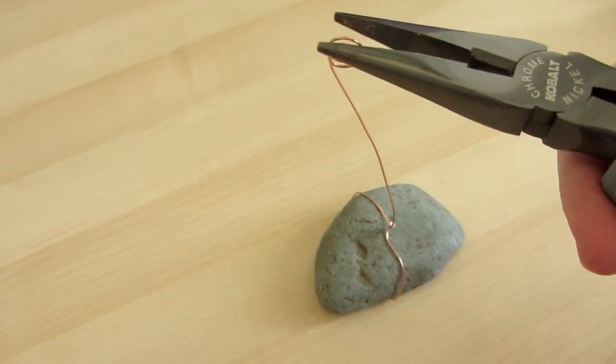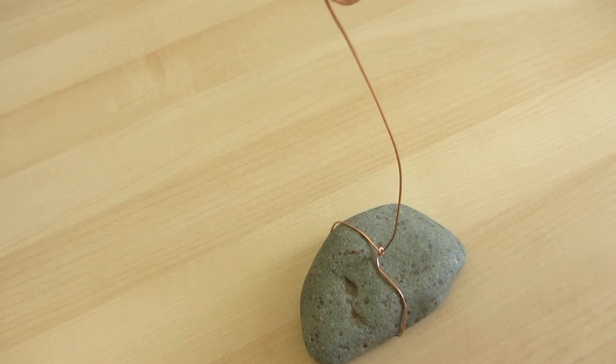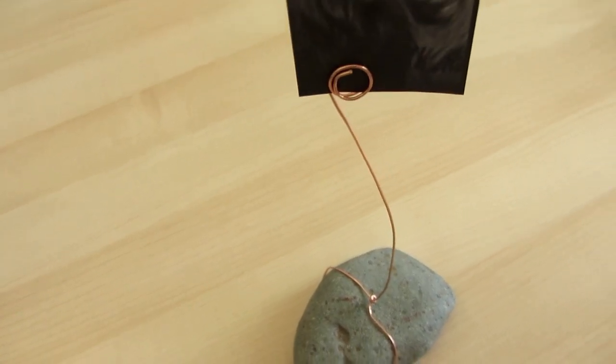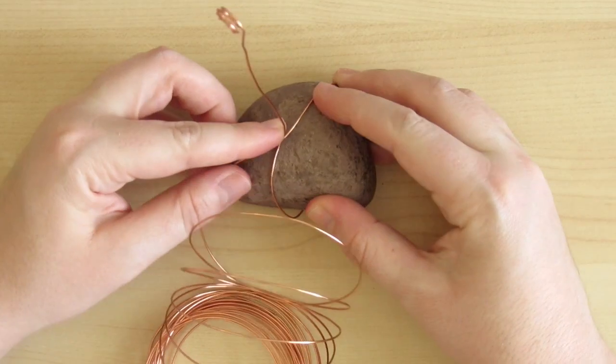You can clamp the spiral together one more time with the pliers if you need to, and then it's ready to hold your photo. If you want a stronger base, you can wrap the wire around the rock twice.